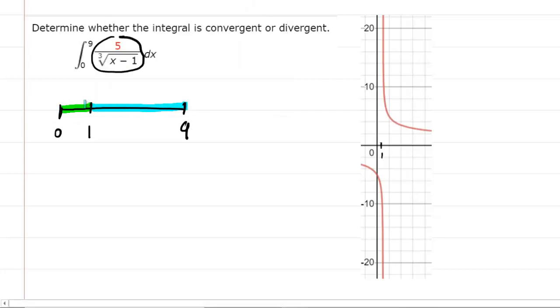And if from 0 to 1 is convergent and also 1 to 9 is convergent, then the overall integral will indeed be convergent. But if either 1 or both of those are divergent, then the answer would be divergent. So we have to take a look at what's going to happen. So we'll evaluate the first integral.